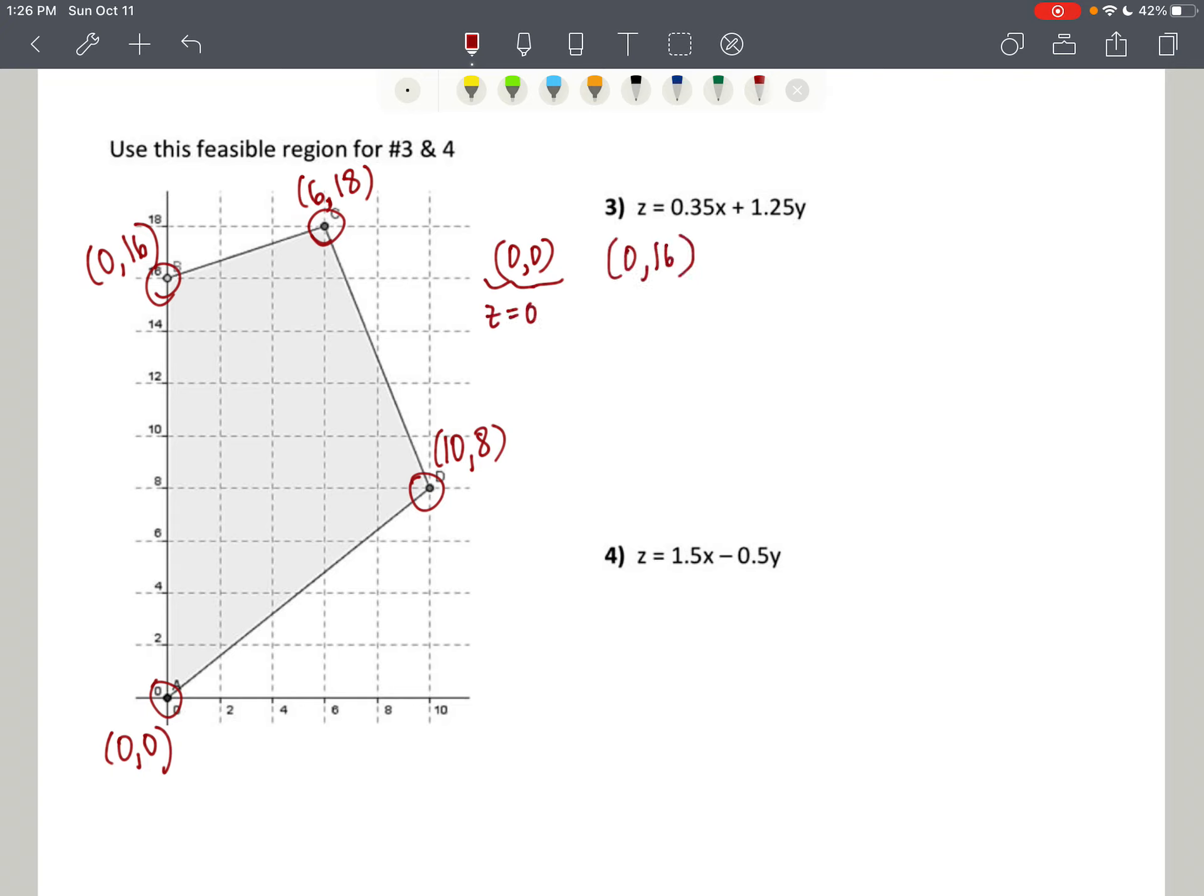Then I'm going to do 0, 16. That's going to be 0 plus 1.25 times 16. If I go over to my calculator, I'm going to get 20. So z equals 20. And then I have another one, 6, 18. And 6 times 0.35 is 2.1. And 18 times 1.25. I use my calculator. I got 22.50. So that's going to be 24.6. So z equals 24.60.